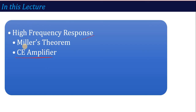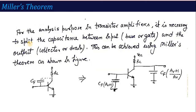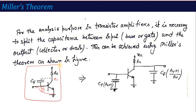High frequency response of common emitter amplifier. First, we require Miller's theorem. Miller's theorem considers the transistor's base and collector terminals — or gate and drain in the case of a FET. In high frequency analysis, it is necessary to split the capacitance between the input and output terminals. This capacitance, generated between the input and output terminals, is called parasitic capacitance.